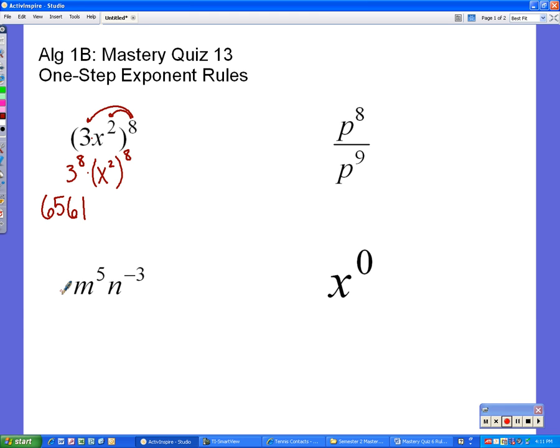Now we actually have to use another exponent rule for the x because we have x to the 2 to the 8th. This is a power raised to another power and we always multiply those exponents in this situation. So we get x to the 2 times 8 which is 16. So the answer for this problem comes out to be 6561 x to the 16th power.